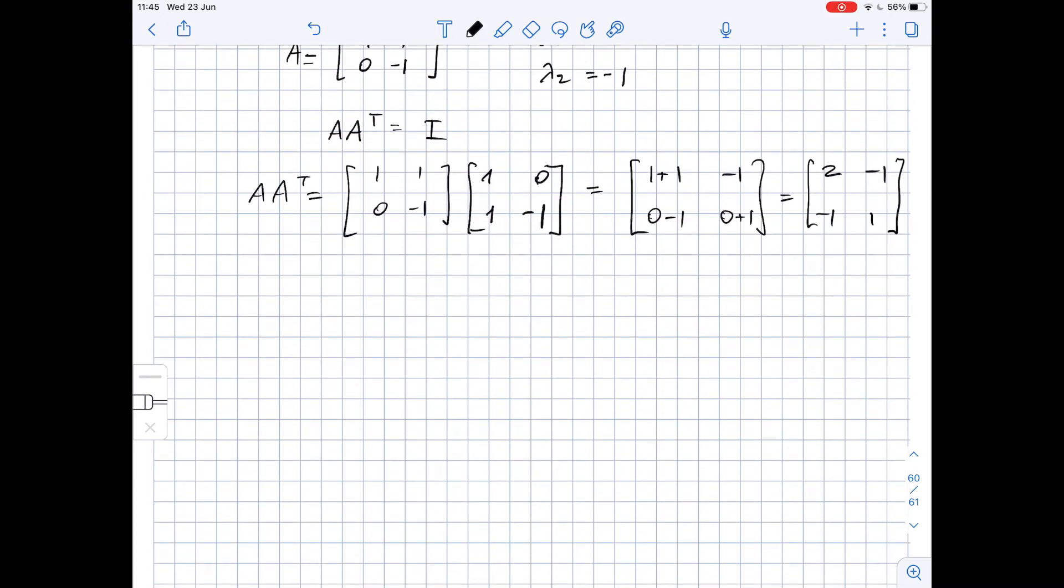As we can see, the product of A and A transposed does not equal the identity matrix [1, 0; 0, 1]. That means that A is not unitary.